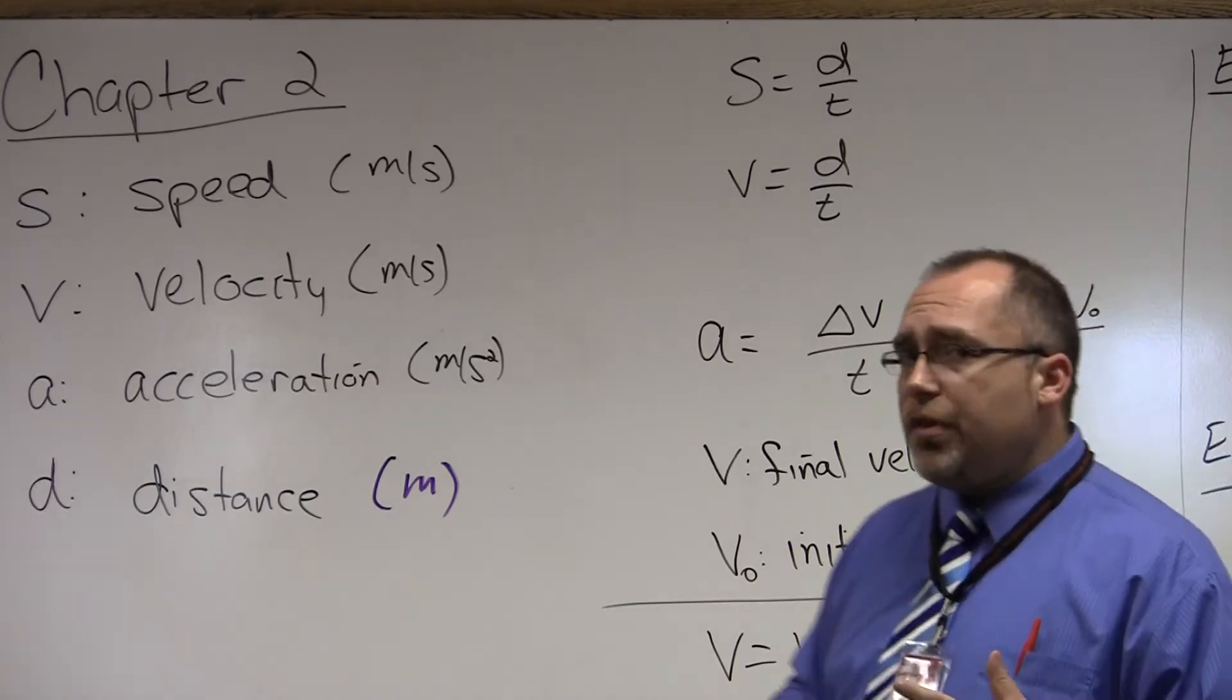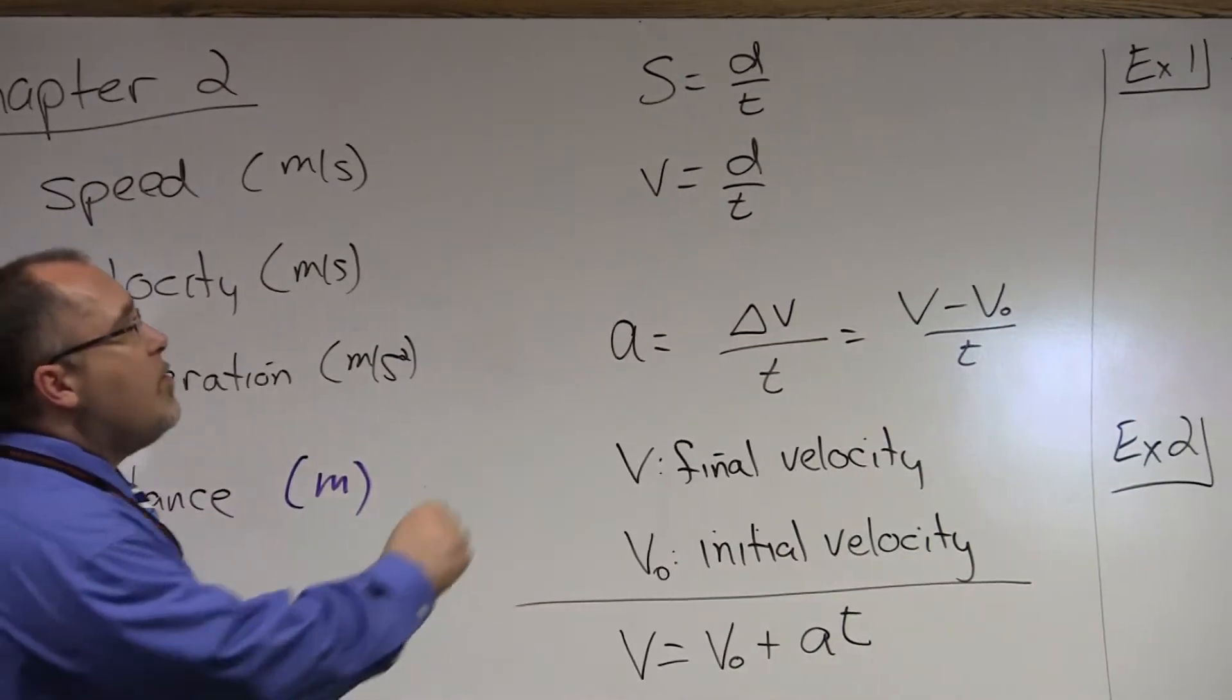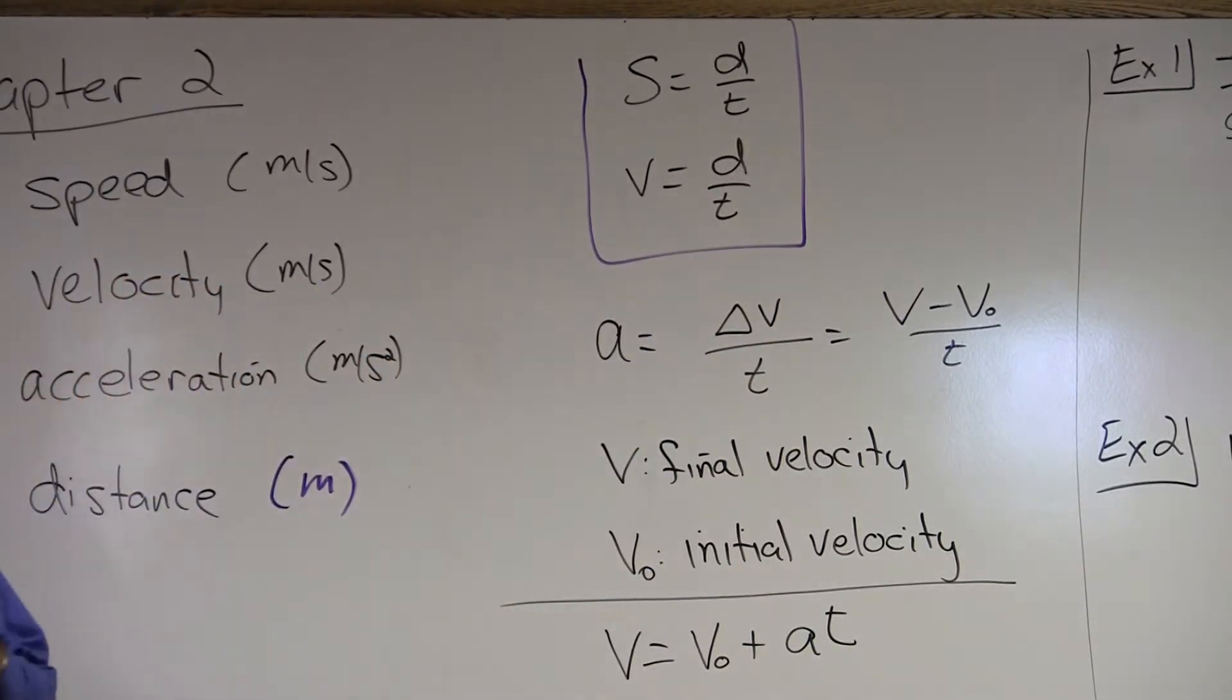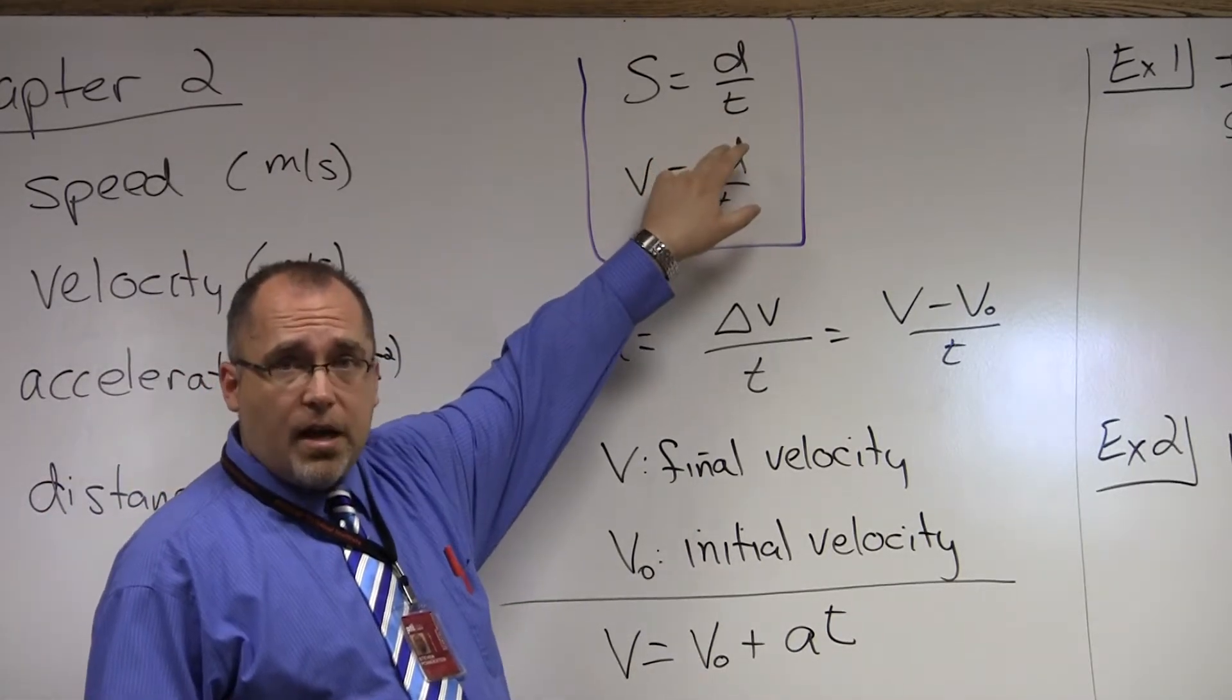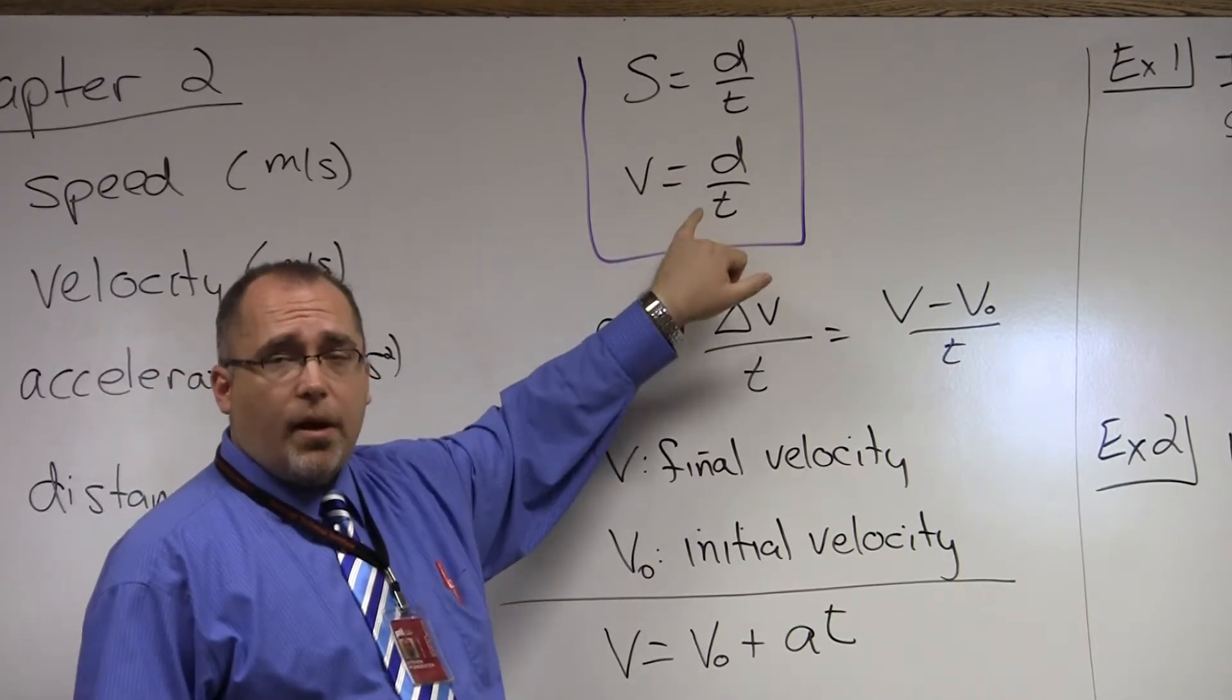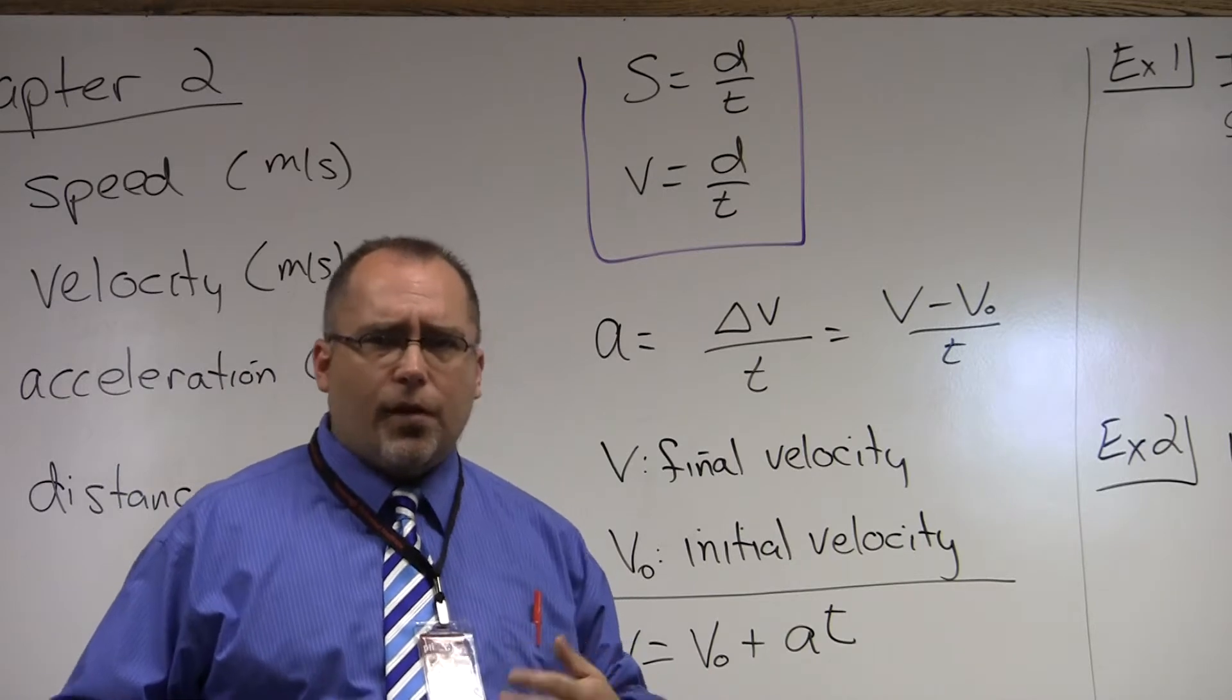Those are the actual symbols, but let's look at the formulas that address those symbols. For instance, these two up here for speed and velocity, notice that it's basically the same formula. One way of calculating speed is distance traveled divided by time elapsed. And for velocity, it's also distance traveled divided by time elapsed. So you're probably thinking, what's the difference between speed and velocity if they're the same formula?